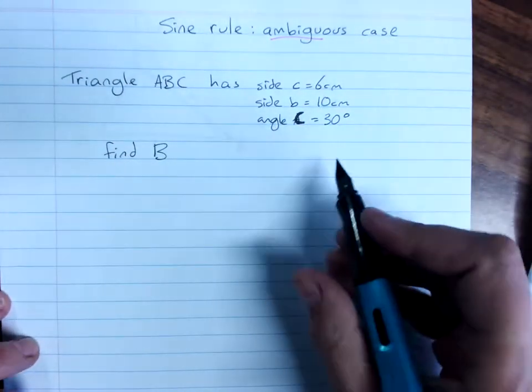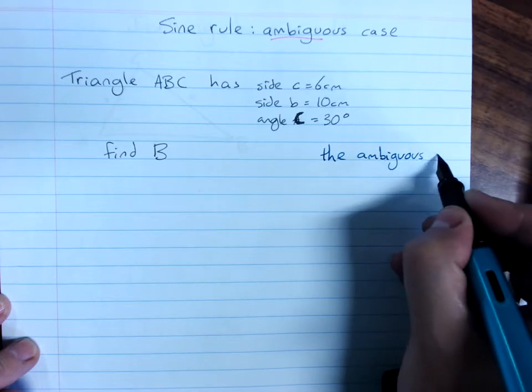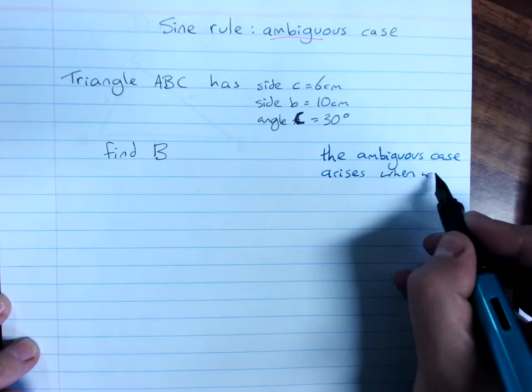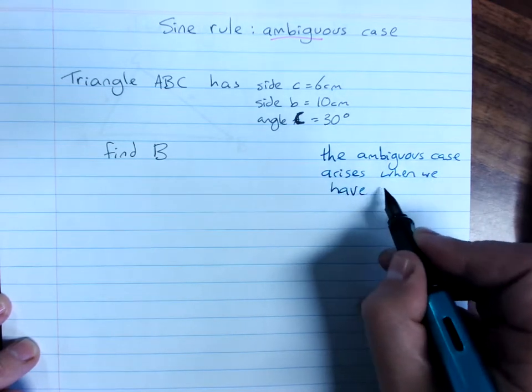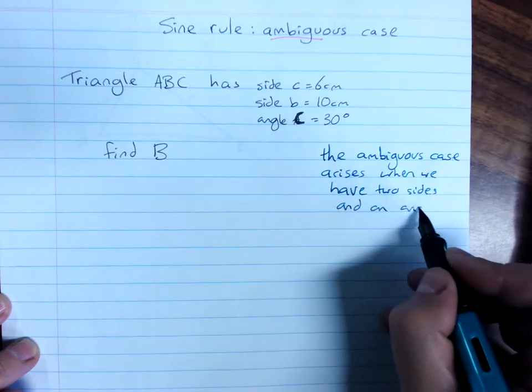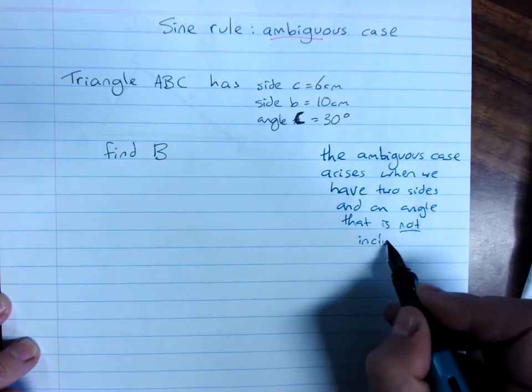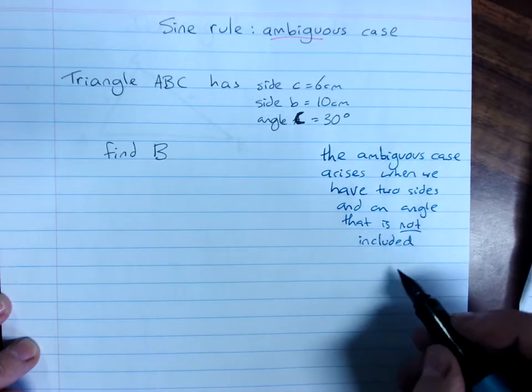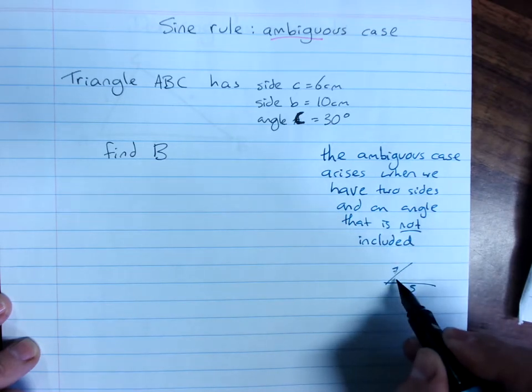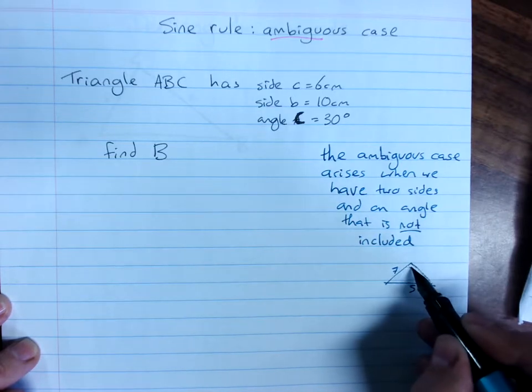So I'll just note that down. Now by the included angle, I mean this is the included angle in here, included between the two sides, so we'd have one of the other two angles.